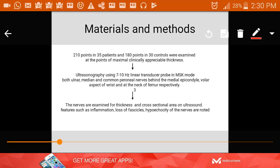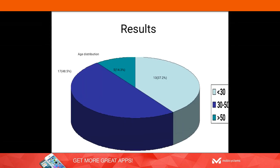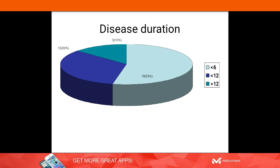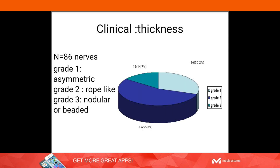The nerves were assessed for thickness, cross-sectional area, and changes such as inflammation, loss of fascicles, and hypoechogenicity. Most patients — around 50% — were between 30 to 50 years of age, and 75% were male. Most were newly diagnosed leprosy patients with disease duration of less than six months. There were around 86 clinically thickened nerves; about 30% were asymmetrically thickened, 55% showed rope-like thickening, and 14% showed nodular or beaded thickening.